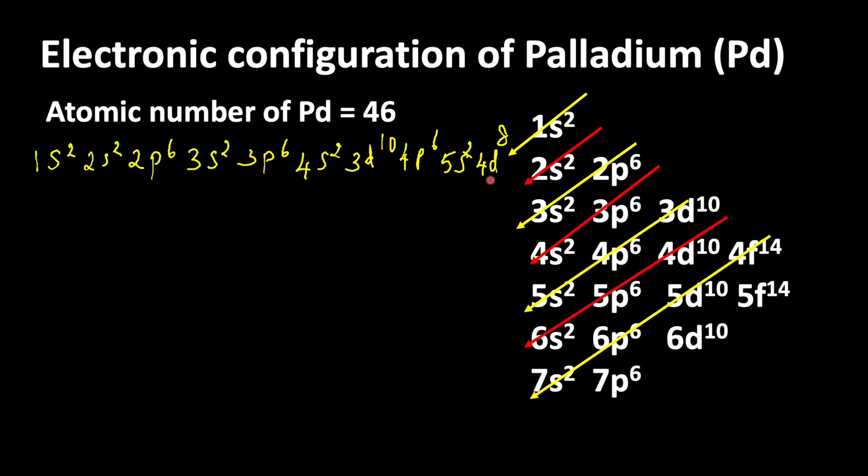To make this d orbital into completely filled orbitals, two of the electrons from 5s orbital will shift from 5s to 4d. This kind of shifting is possible because in transition elements, (n-1)d orbital and ns orbital energy difference is very less.